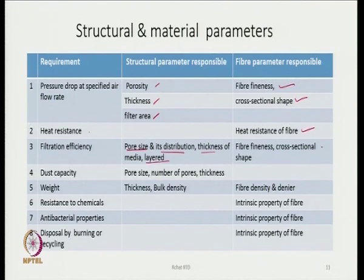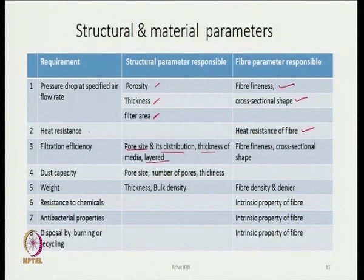Pressure drop depends upon porosity, thickness, the overall filter area, and also fiber fineness and cross-sectional shape. Heat resistance is mainly decided by the heat resistance of the fiber — it is a basic fiber property; structural parameters do not have much role. Filter efficiency mainly depends on structural parameters like pore size distribution, thickness of the media, whether the structure is layered or not, and fiber fineness and cross-sectional shape. A similar table is provided for other requirements such as antibacterial properties.